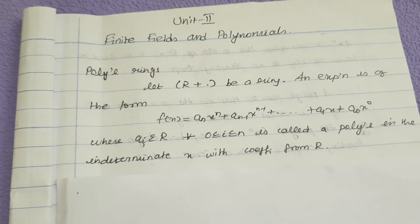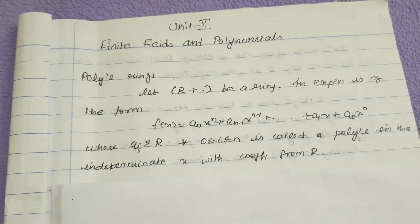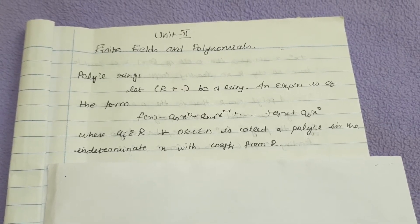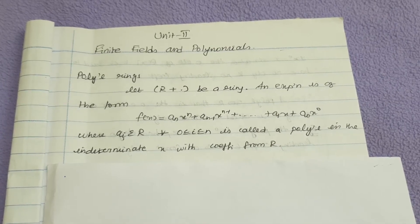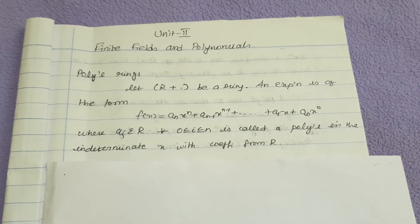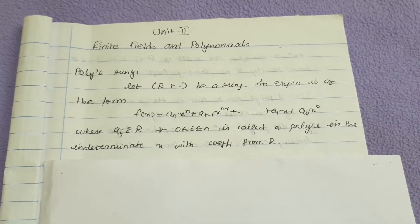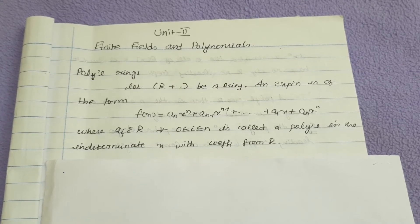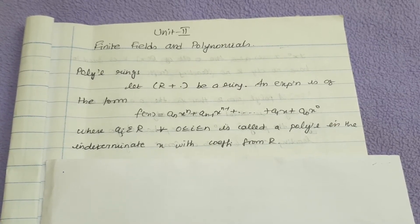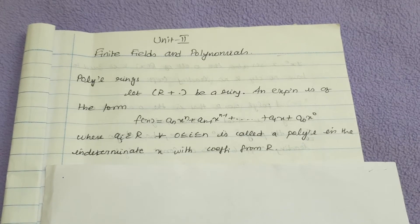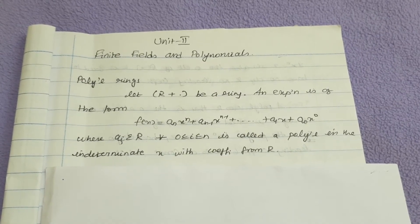In this video, we are going to study about finite fields and polynomials. First, let us see the definition of polynomial rings. Let R with respect to addition and multiplication operator be a ring. An expression of the form f(x) = a_n x^n + a_{n-1} x^{n-1} + ... + a_1 x + a_0, where a_i belongs to R for every i from 0 to n, is called a polynomial in the indeterminate x with coefficients from R.